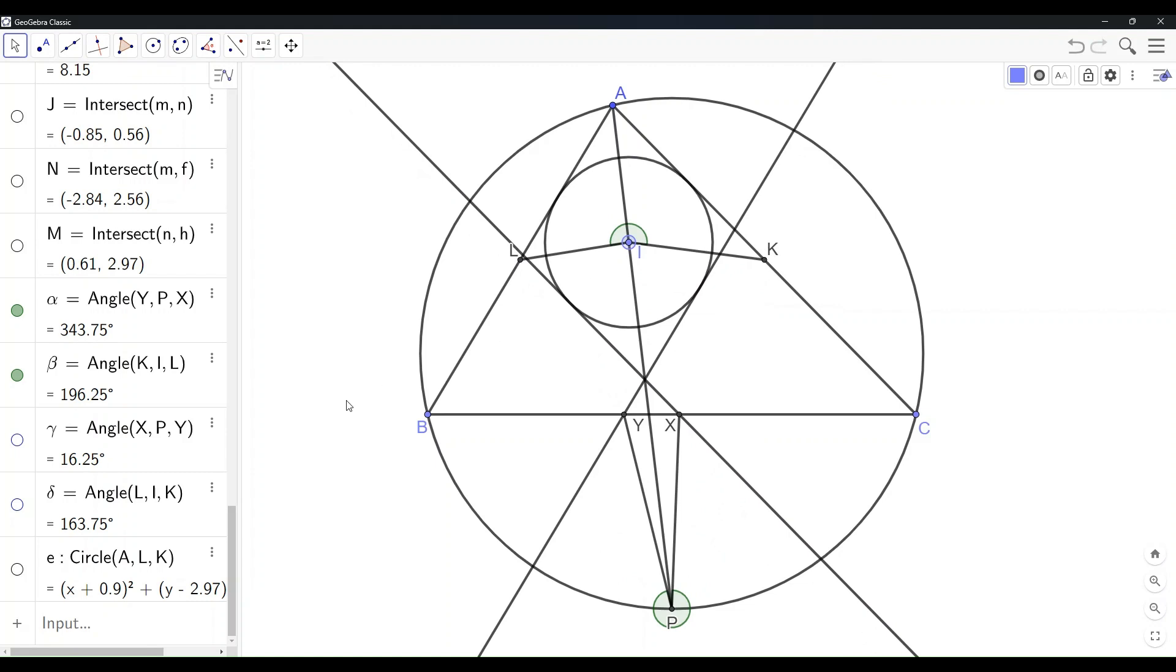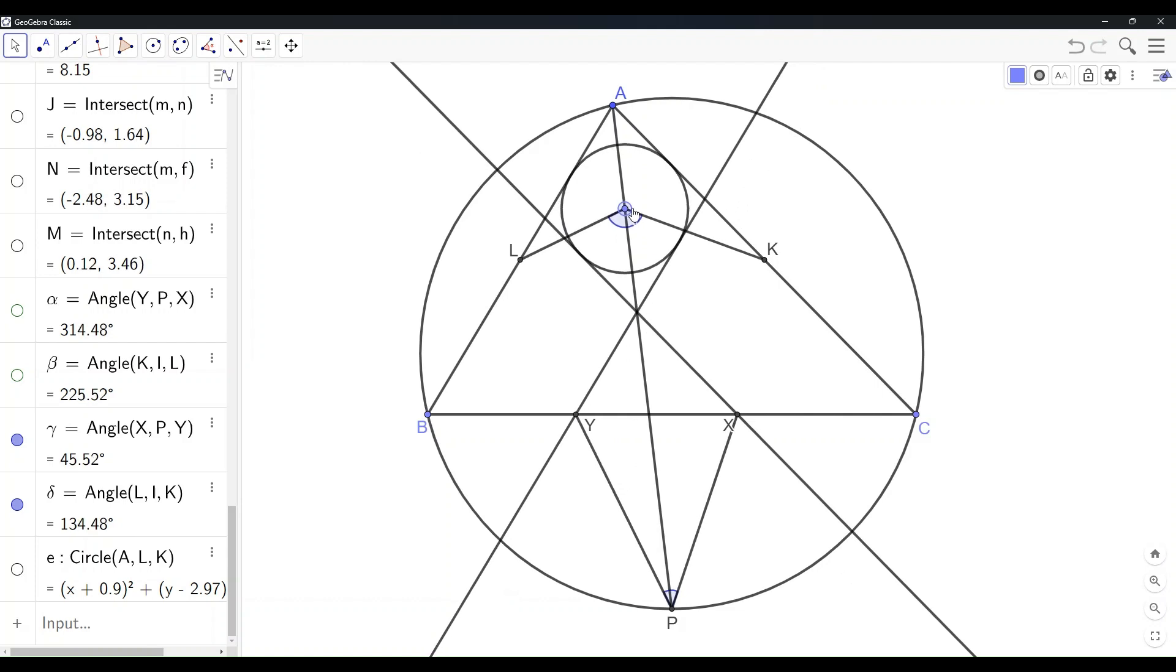However, if we define the measures of the angles to be the one less than 180 degrees, the sum would still be 180 degrees.